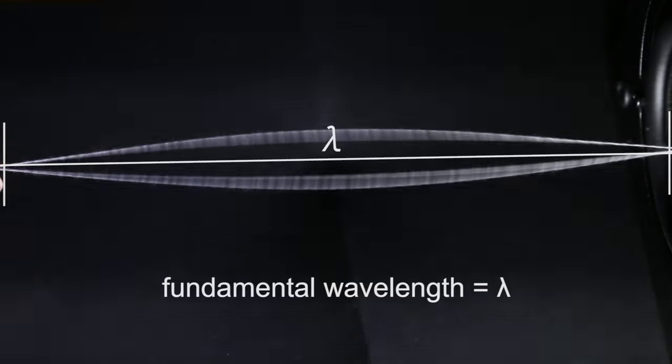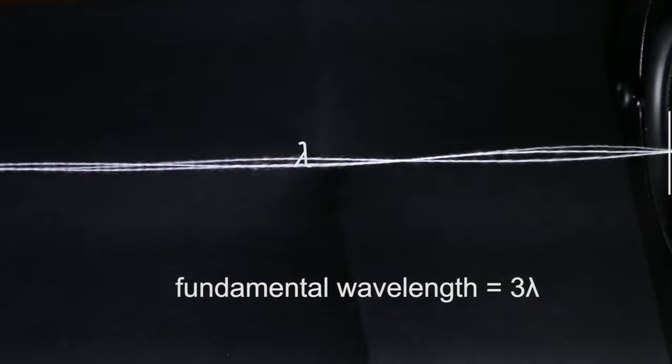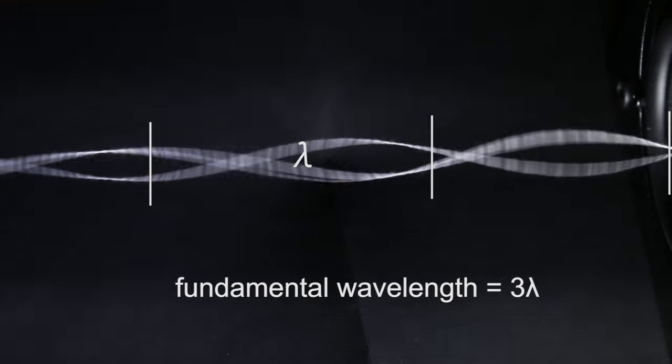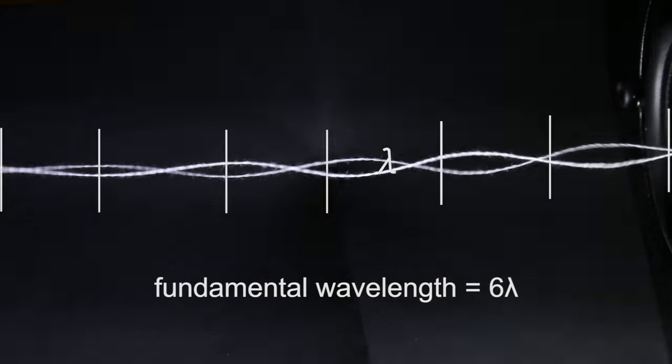There actually are higher frequency modes that we can isolate by progressively decreasing the string tension. These are called overtones of the fundamental, and we can see them without changing the strobe frequency, because they were always integer multiples of the fundamental.